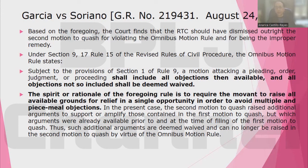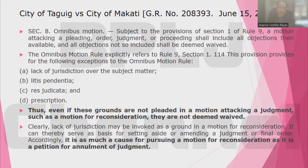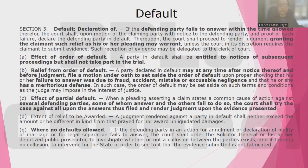In Garcia versus Soriano, the second motion to quash raised additional arguments to support or amplify those contained in the first motion to quash, but which arguments were already available prior to and at the time of the filing of the first motion to quash. Thus, such additional arguments are deemed waived and can no longer be raised in the second motion to quash. In City of Taguig, even if these grounds are not pleaded in a motion attacking a judgment such as a motion for reconsideration, they are not waived. Lack of jurisdiction may be invoked at any stage of the action, even in a petition for annulment of judgment.